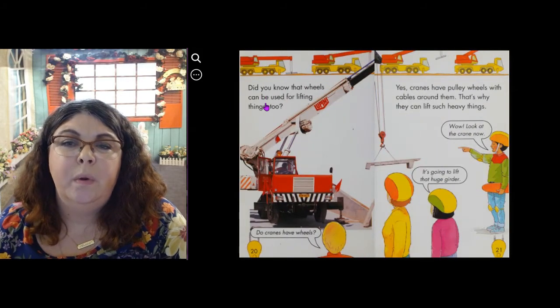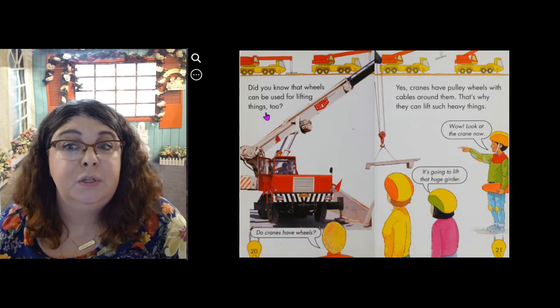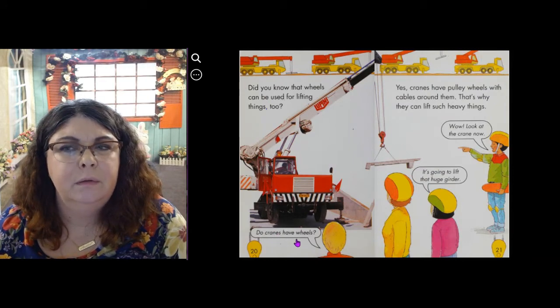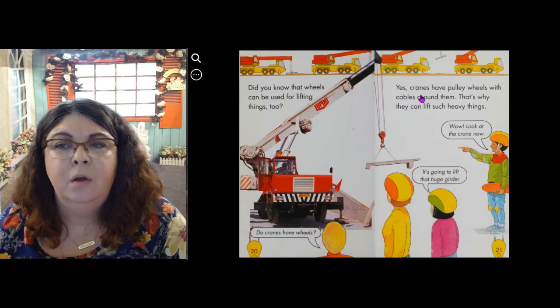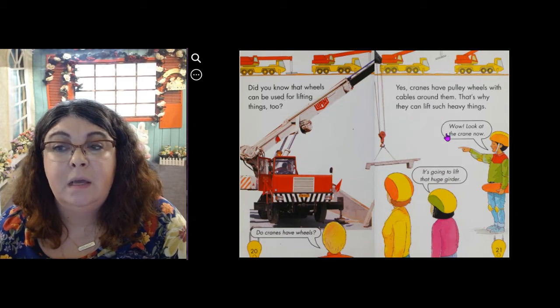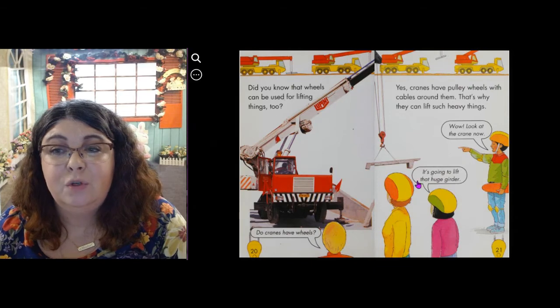Did you know that wheels can be used for lifting things too? Do cranes have wheels? Yes. Cranes have pulley wheels with cables around them. That's why they can lift such heavy things. Wow. Look at that crane now. It's going to lift that huge girder.